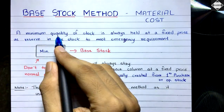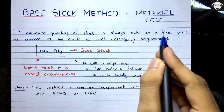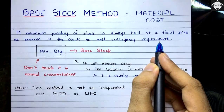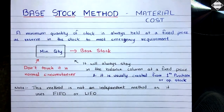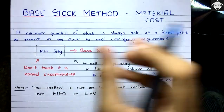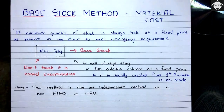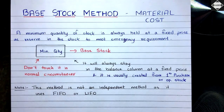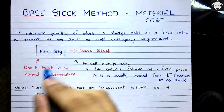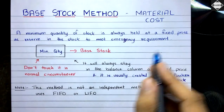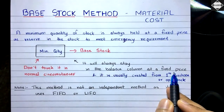Under this method, a minimum quantity of stock is always held at a fixed price as a reserve in the stock to meet emergency requirements. The question will tell you a certain quantity — say 100 or 500 — that you have to maintain as a safety stock, as a base stock. You will not touch that quantity; it will remain in your warehouse as an emergency requirement. It will always stay in the balance column at a fixed price.